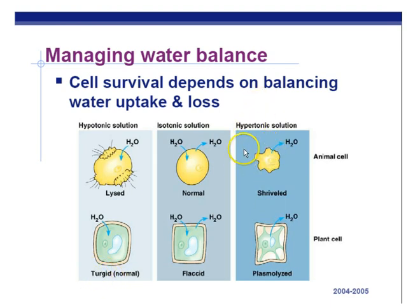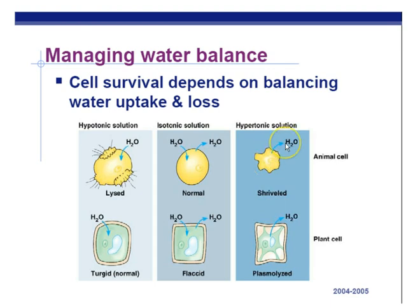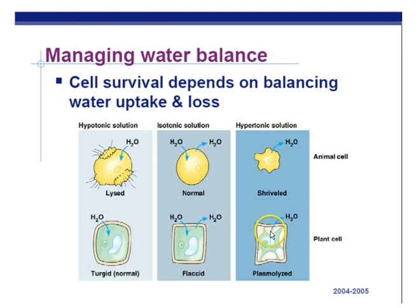In a hypertonic solution — 'hyper' means above, meaning more solutes than the cell — the cell's water is more pure on the inside, so water leaves the cell by osmosis, moving from higher to lower concentration. The cell shrivels and starts to die; that's why you don't drink salt water from the ocean. In plant cells placed in a hypertonic solution, water leaves by osmosis, the cell membrane pulls away from the cell wall, causing plasmolysis — the destruction of the cytoplasm and pulling away of the cell membrane.